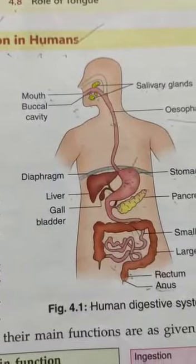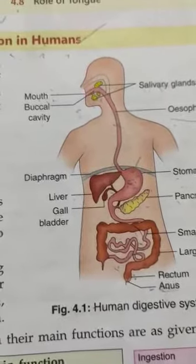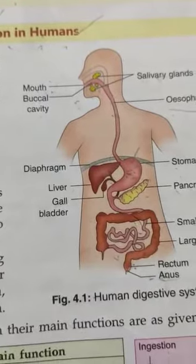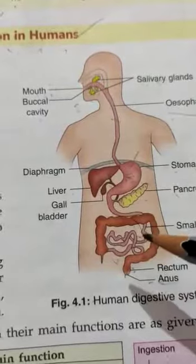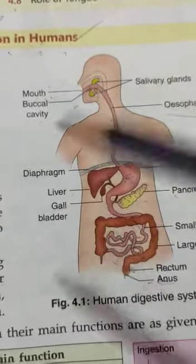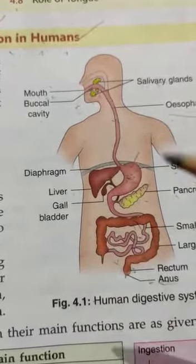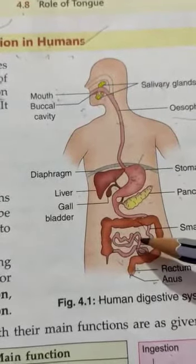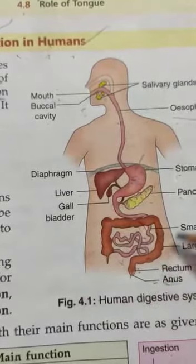Good morning dear students. During the last video we learned about the human digestive system, basically the two parts: the alimentary canal, which is the full pipe, and the digestive glands like salivary glands, pancreas, and liver. In the alimentary canal we learned about mouth, esophagus, stomach, small intestine, large intestine, rectum, and anus.